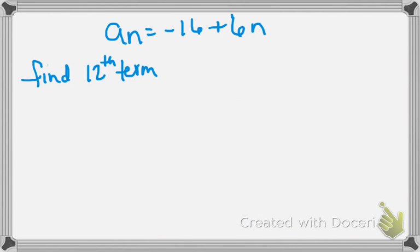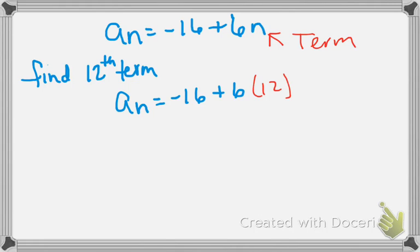So what if they ask you to find the 12th term? Okay, so you take your equation that you had. AN equals negative 16 plus 6. And then let's say we're going to put the 12 in for N. Because N represents the term. That's what we're looking for.